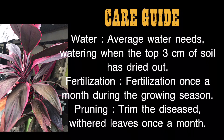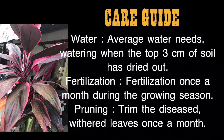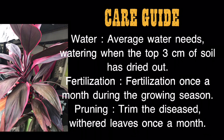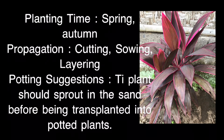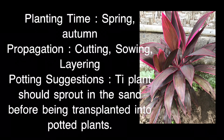Care guide: Water — average water needs; water when the top 3 centimeters of soil has dried out. Fertilization — once a month during the growing season. Pruning — trim diseased and withered leaves once a month. Planting time — spring or autumn. Propagation — by cutting, sowing, or layering. Potting suggestions — the Ti plant should sprout in sand before being transplanted into potted plants.